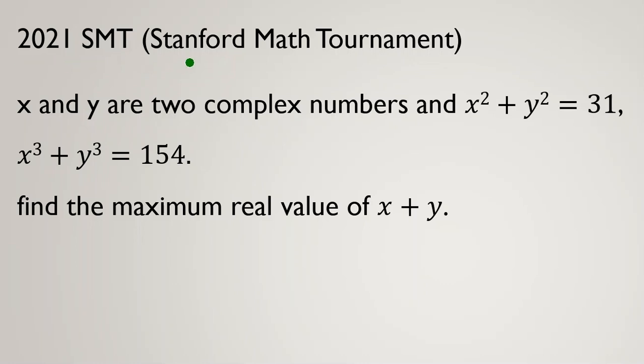2021 SMT Stanford Math Tournament. X and Y are two complex numbers, and X squared plus Y squared equal to 31, X cubed plus Y cubed equal to 154, and we should find the maximum real value of X plus Y.